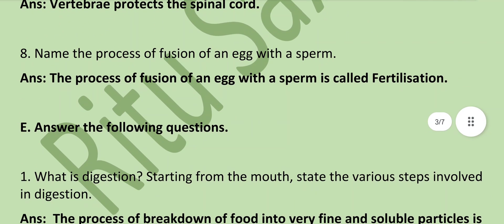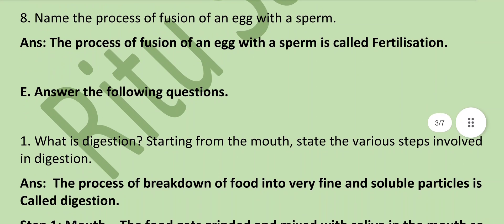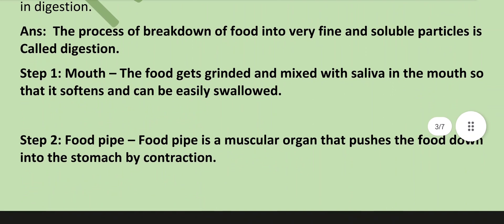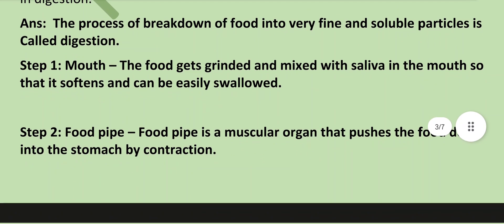What is digestion? State the various steps involved in digestion starting from the mouth. The process of breaking down of food into very fine and soluble particles is called digestion. Step one — Mouth: the food gets ground and mixed with saliva in the mouth so that it softens and can be easily swallowed.